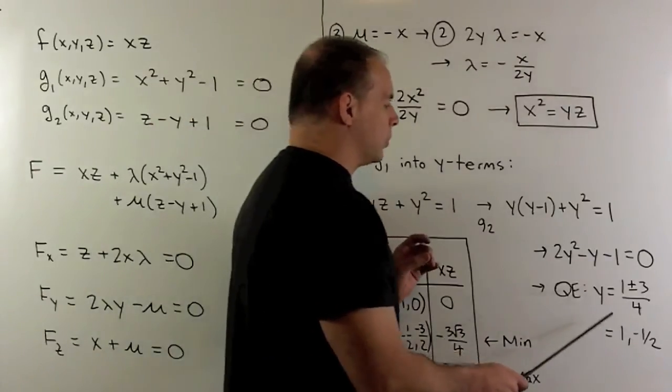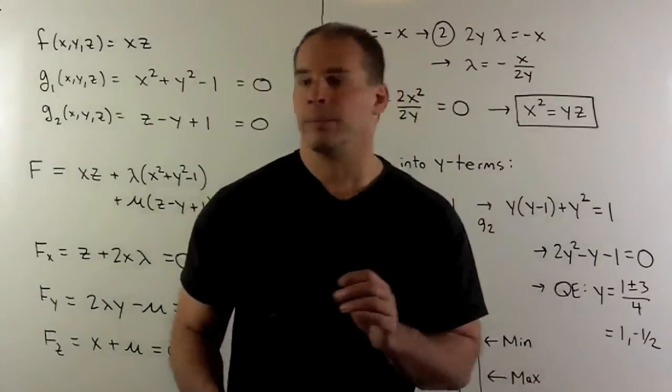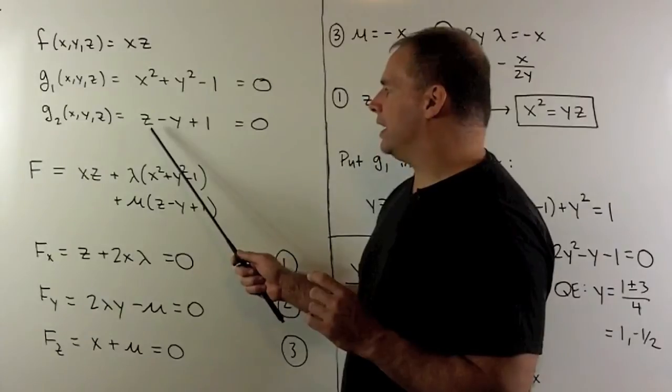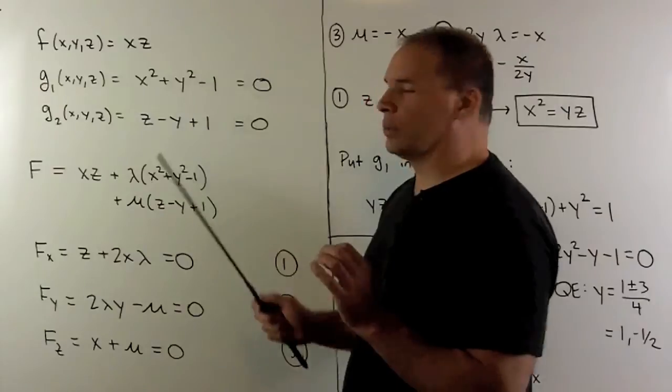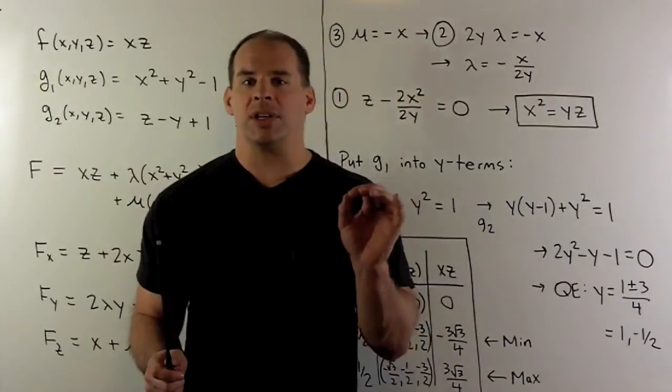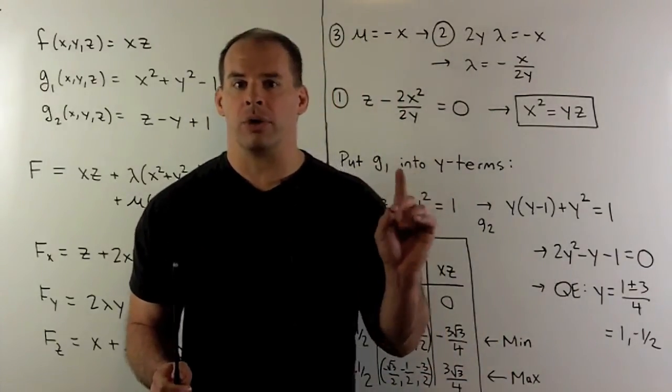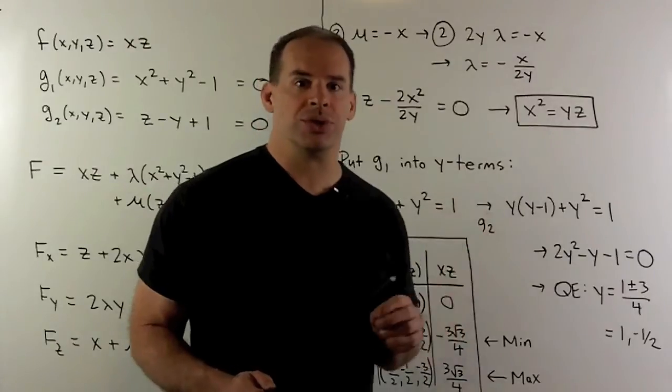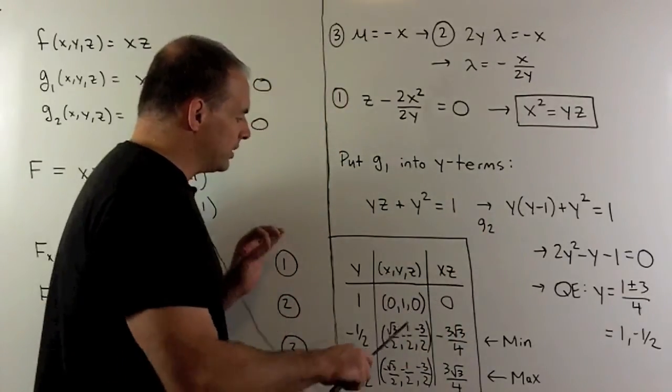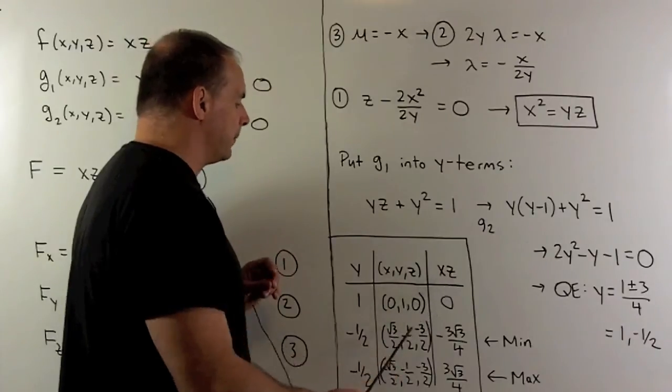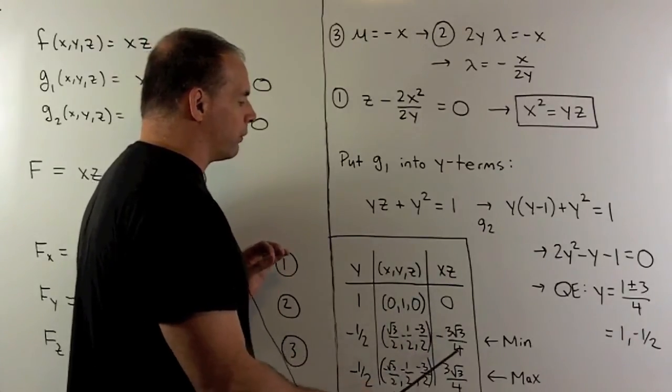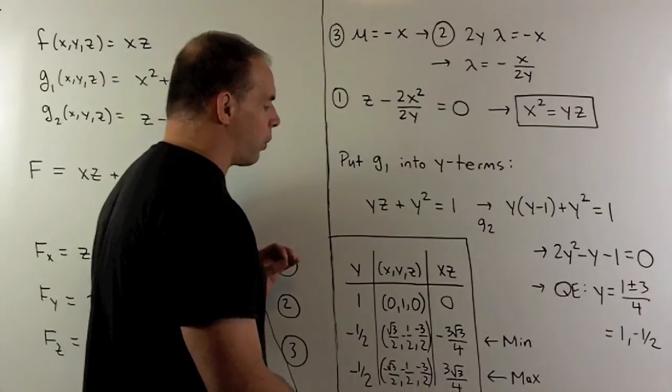If we let y be equal to -½, then we'll have z equal to -3/2. We'll have x² equal to 3/4, or x equal to ±√3/2. So we get two solutions there, these two points here. I solve for xz, we get -3√3/4 and 3√3/4.